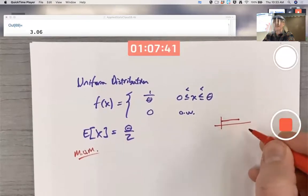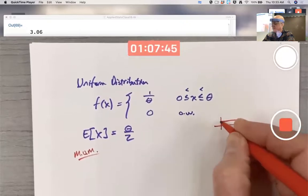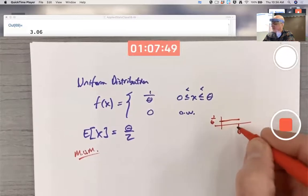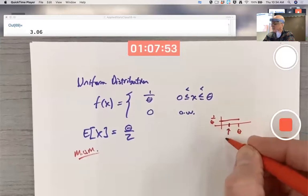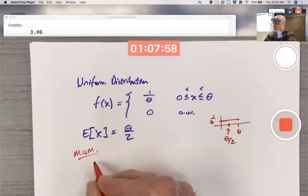The mean is center of mass. The interval here has length theta. It goes from 0 to theta halfway. The midpoint there is going to be theta over 2. That is going to be the mean. You can verify it with an integral.